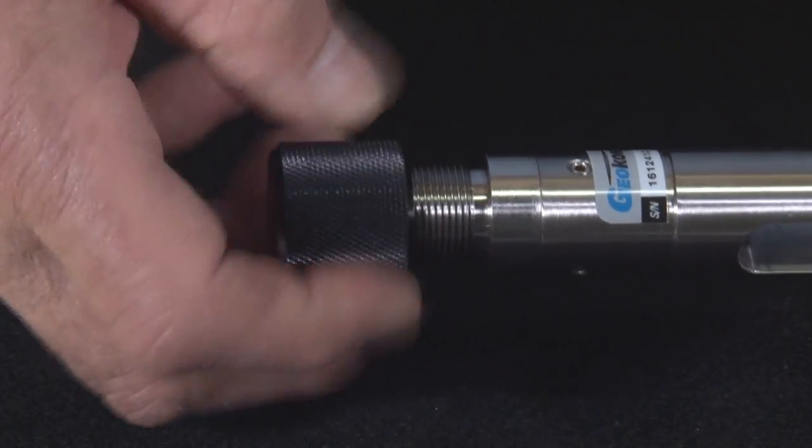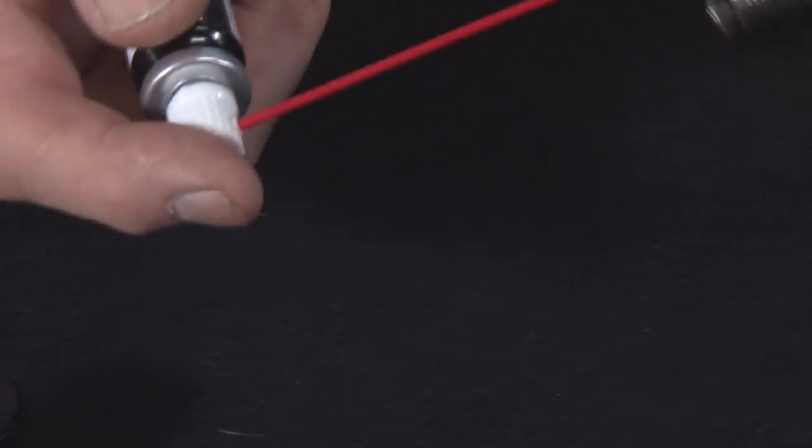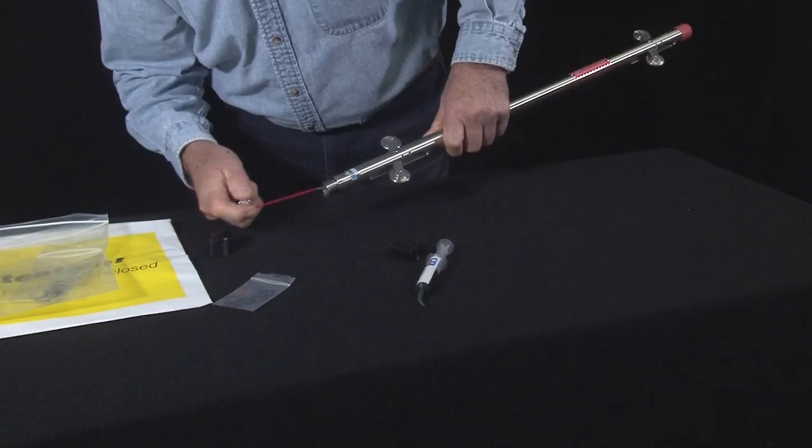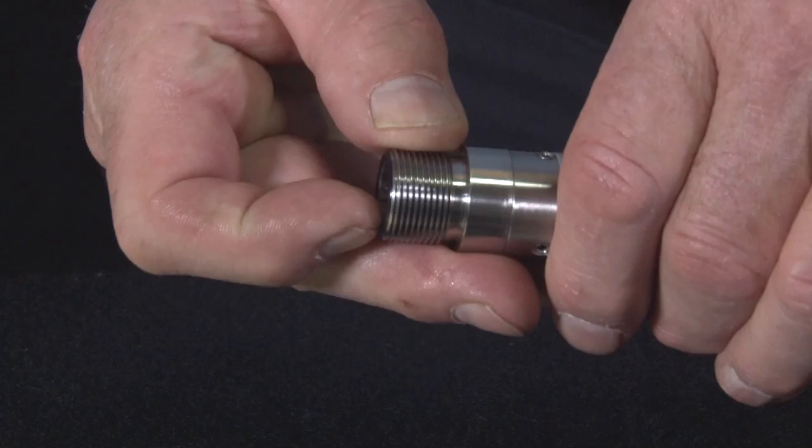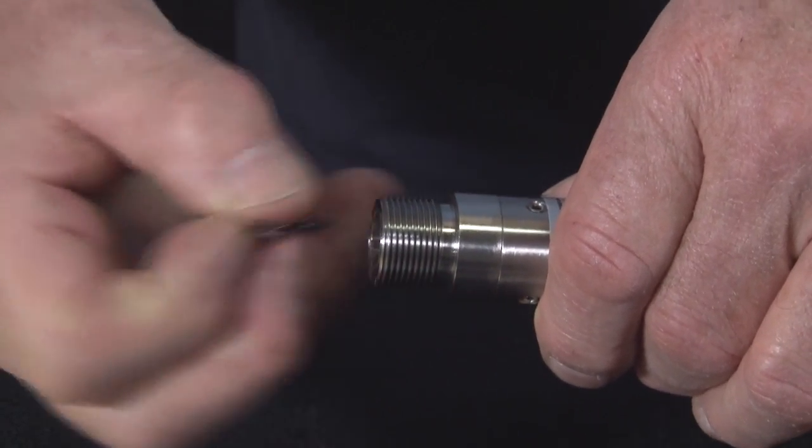Unscrew the protective cap from the probe connector. Lightly spray the interior with the supplied cleaner. Drain out the excess. Remove the O-ring from the connector and replace with an unused ring.